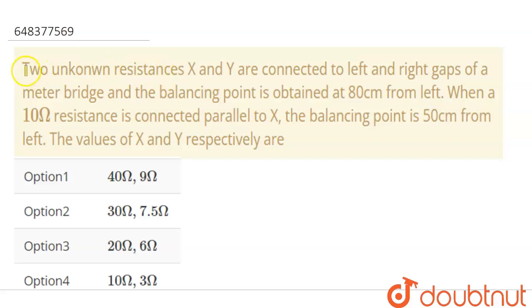Hello students, the question is: two unknown resistances x and y are connected to left and right gaps of the meter bridge and the balancing point is obtained at 80 centimeters from left. When a 10 ohm resistance is connected parallel to x, the balancing point is 50 centimeters from left. The value of x and y respectively are?